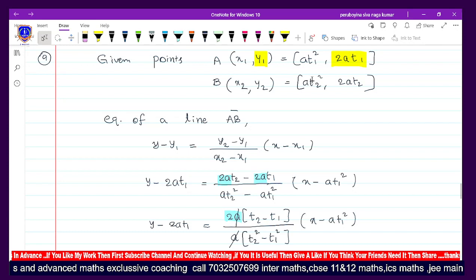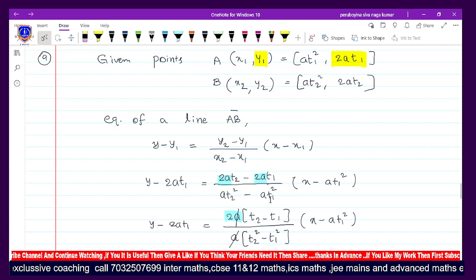y₁ is 2a₁ and y₂ is 2a₂. So y₁ is 2a₁, right, and y₂ is 2a₂ divided by x₂ equals a₂² and x₁ equals a₁² bracket, x minus x₁ equals a₁².